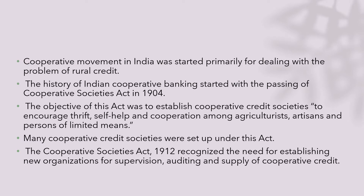We have to understand that there was a movement in India which is known as a cooperative movement, and it was started especially for dealing with the problem of rural credit. When there was the introduction of the banking system in India, they mostly concentrated in urban areas. So the rural people were actually suffering a lot because they were not getting credit. The history of Indian cooperative banking started with the passing of the Cooperative Societies Act in 1904.